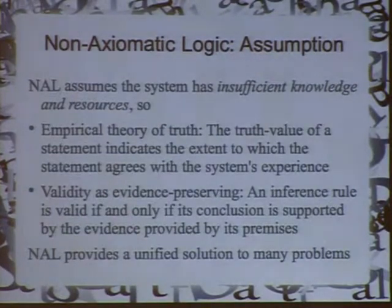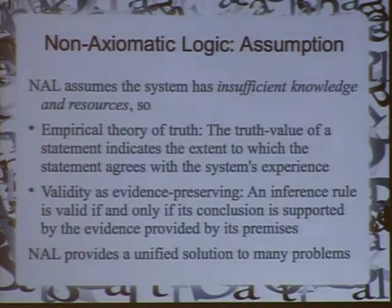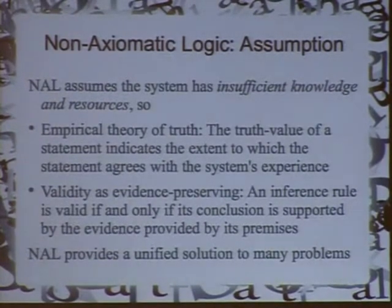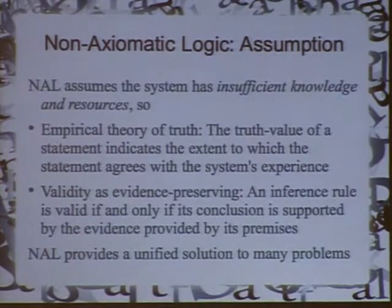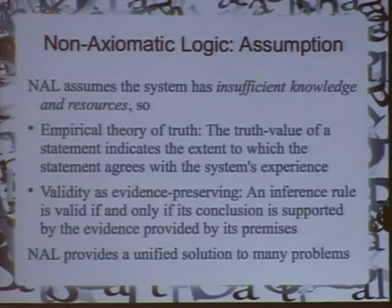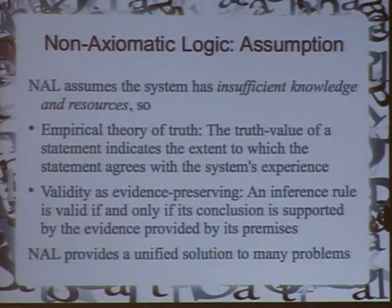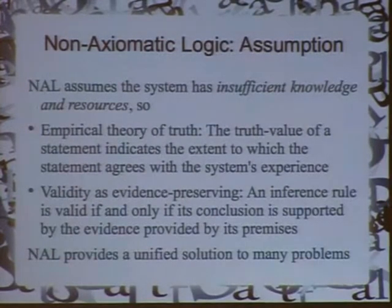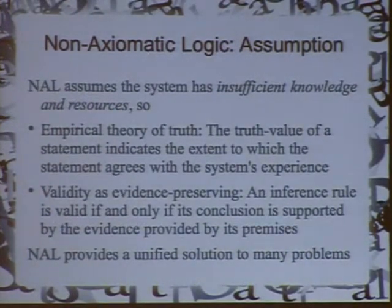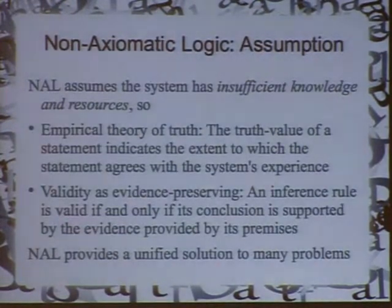That's basically where I started. Today I don't have time to talk about details, but I will talk about the assumptions. The logic I developed is called non-axiomatic logic. The basic assumption is that the system has to work with insufficient knowledge and resources when doing reasoning. The key point I want to mention is, first, it will involve a new theory of what is truth. I will use what I call an empirical theory of truth, or take truth as evidential support — the truth value is judged according to what the system knows, the available evidence, not compared with a model or a world. That will fundamentally change the situation.